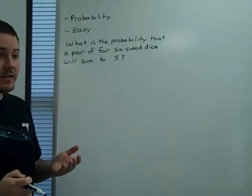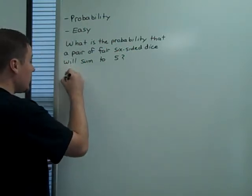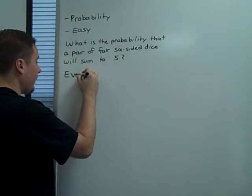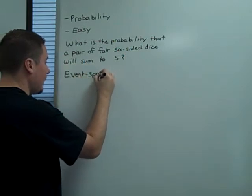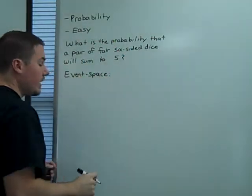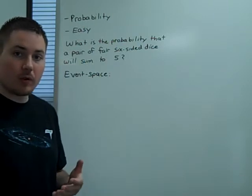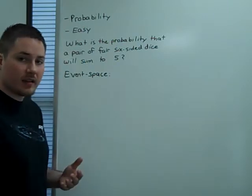So first, let's figure that part out. Now, the event space, that is, how many ways can I roll two six-sided dice, is fairly easy to calculate.